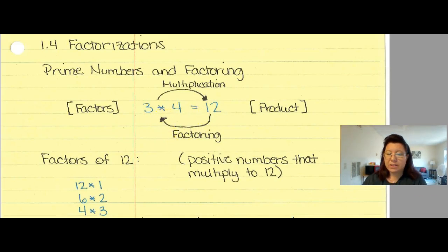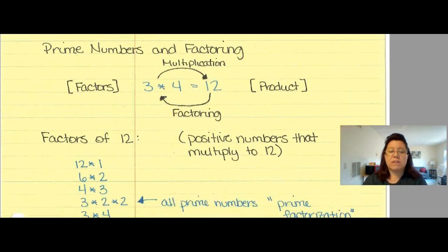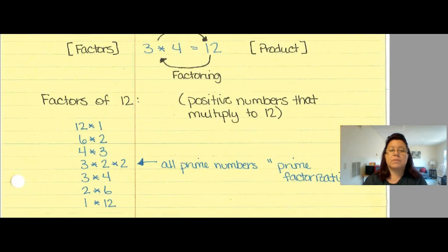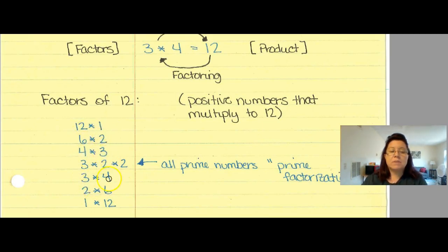Let's take a look at the factors of 12. Now these are the positive numbers: 12 times 1, 6 times 2, 4 times 3, 3 times 4, 2 times 6, 1 times 12.